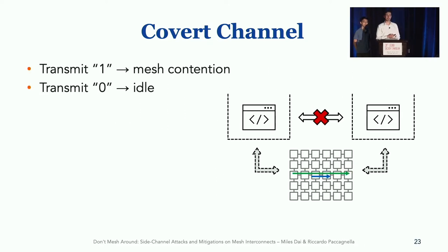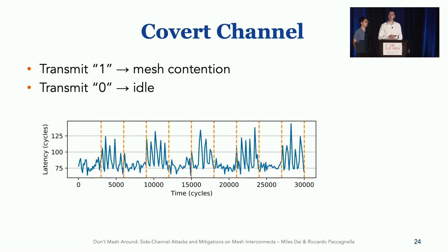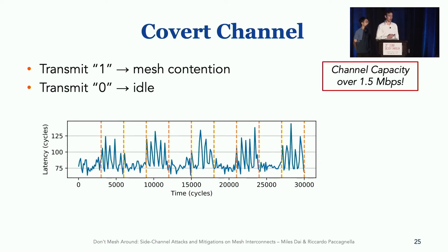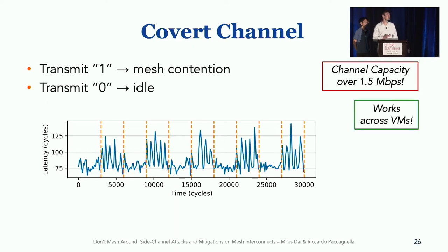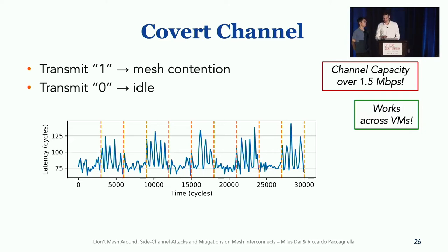This covert channel can, for example, encode ones and zeros as different levels of interconnect contention. We show in the paper that this covert channel can achieve capacities of over 1.5 megabits per second, which is on par with state-of-the-art covert channels that do not rely on shared memory. We also show that it works across virtual machines. Here is an example of a latency trace that decodes to a sequence of alternating zeros and ones.